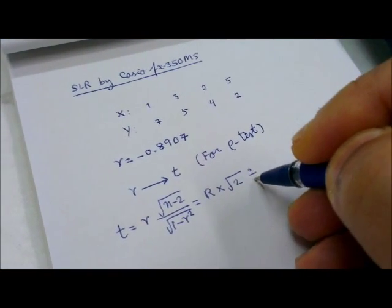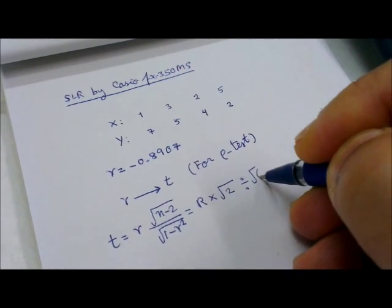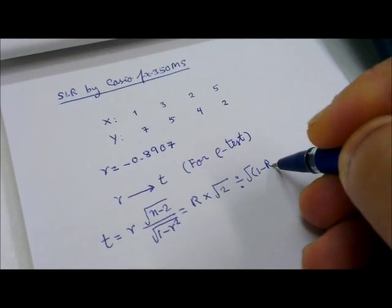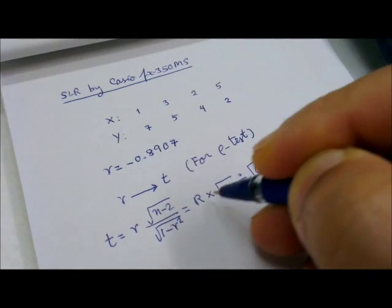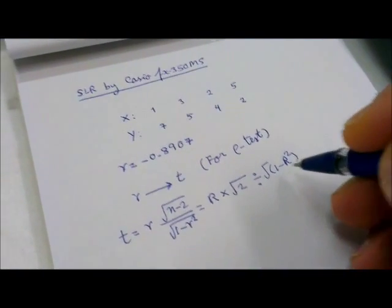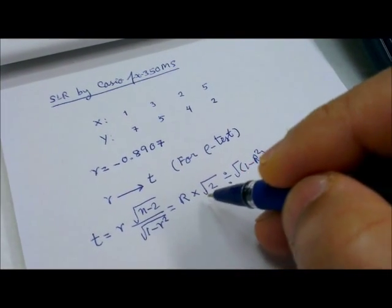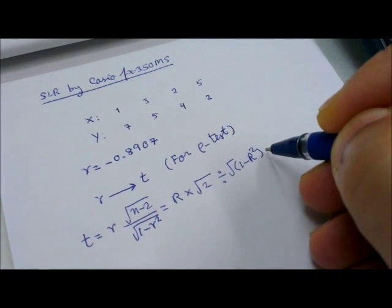You divide by square root of, here open bracket, 1 minus R square. You will see like this. You must make this appear on your calculator screen.